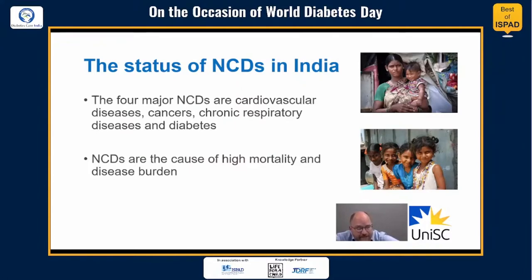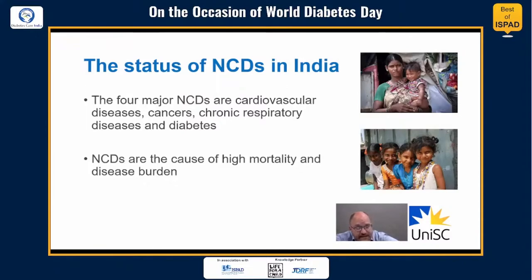Nearly 5.8 million people are estimated to die from NCDs every year in India — in other words, one in four Indians has a risk of dying from an NCD before the age of 70. The contribution of NCDs to the total disease burden, measured in disability-adjusted life years (DALYs), increased from 30 percent in 1990 to 55 percent in 2016. The proportion of deaths due to NCDs among all deaths also increased from 37 percent in 1990 to 61 percent in 2016.